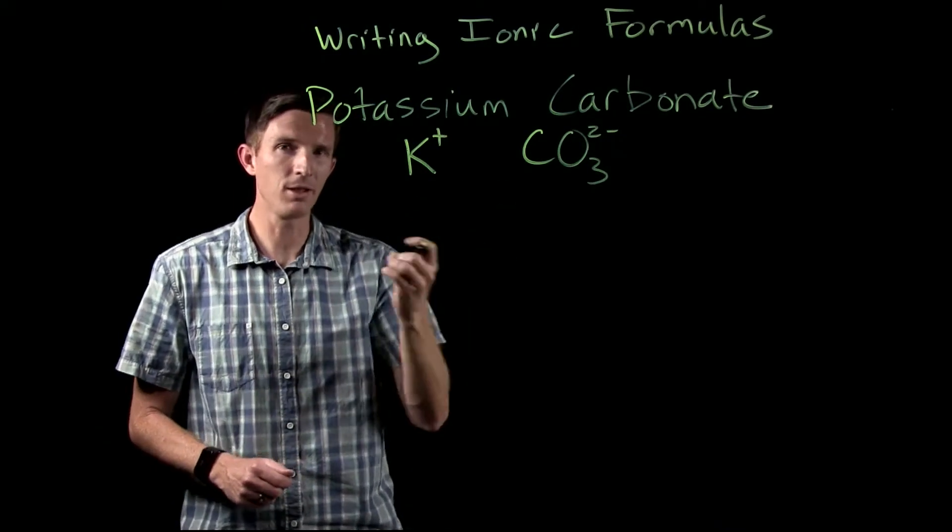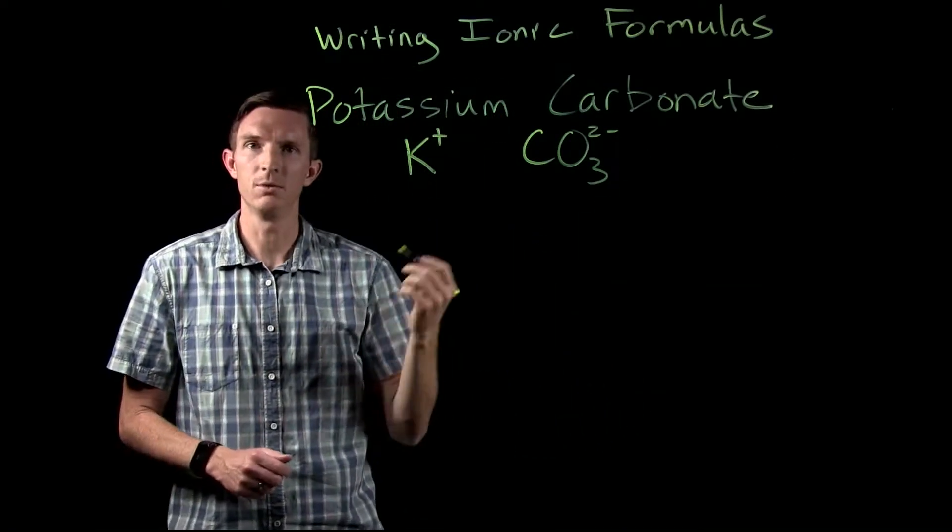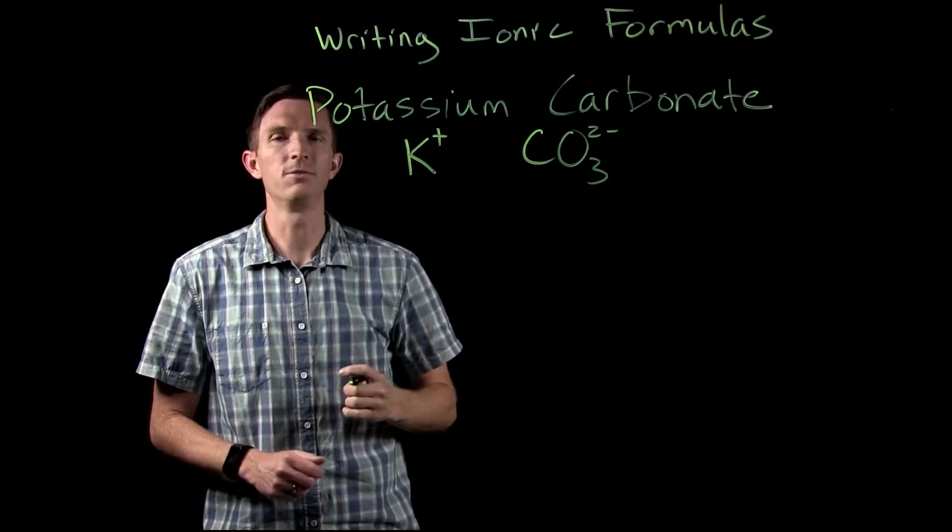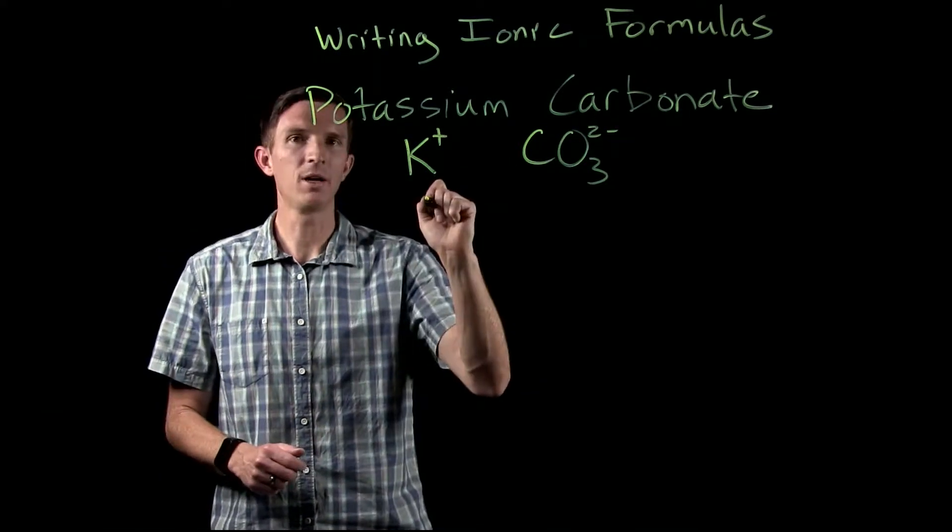An easy way to identify a polyatomic ion is that it ends with that -ate ending. -ate and -ite are good ways for us to recognize polyatomic ions.